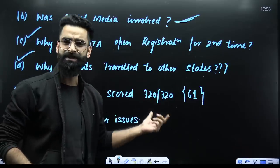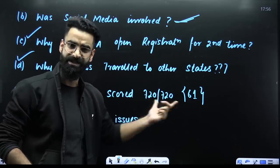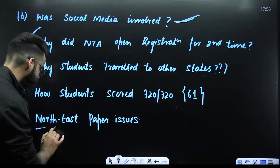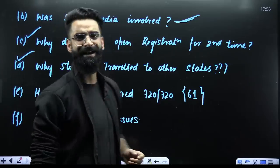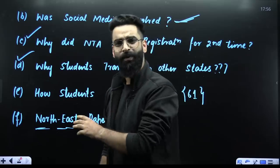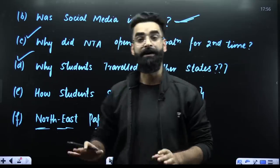And this is something which we already knew. How come 61 students can score 720 out of 720? This was one more question. And there was one major concern related to the paper leak case which happened in the northeastern part of the country too.